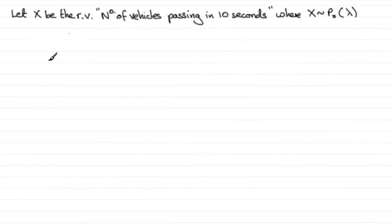Now for this next part, what I've done is I've defined my random variable X as being the number of vehicles passing in 10 seconds, where X is distributed as a Poisson distribution with a mean of lambda.